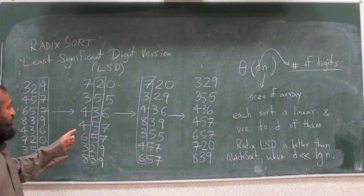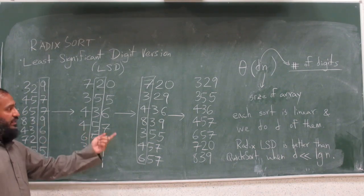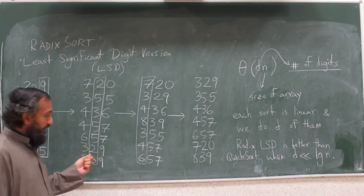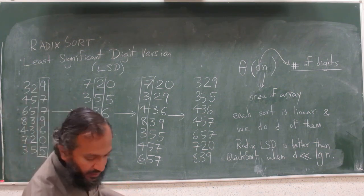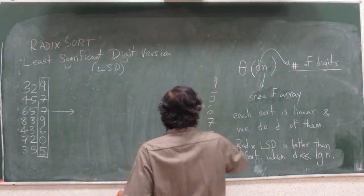Okay, in the last video we did a demonstration of the least significant digit version and we saw the complexity of performing this sorting algorithm. Now, why does this work? This is important to talk about, to see why it works.